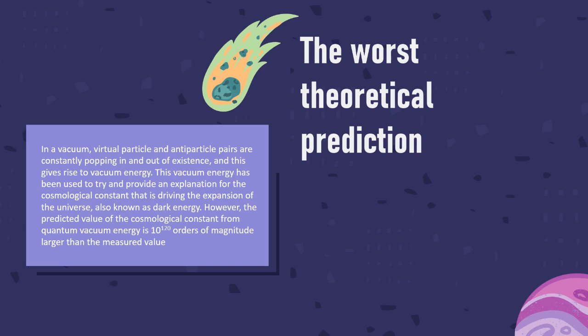However, the predicted value of the cosmological constant from quantum vacuum energy is 10 to the 120 orders of magnitude larger than the measured value, which has been called the worst theoretical prediction in the history of physics.